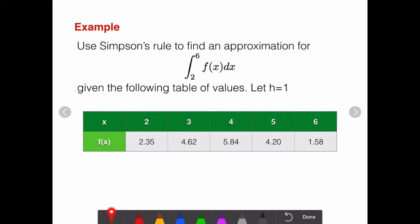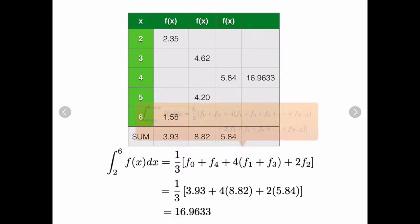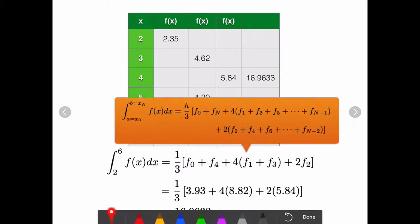Based on this, I can use the Simpson's rule formula. This is the formula that I have here. You have the first point, so this is your f0, then f1, f2, f3, and so on.